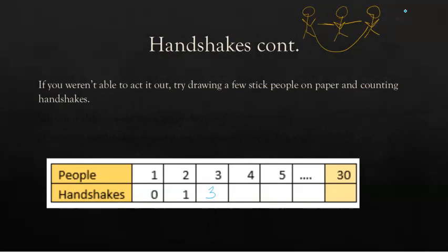What about a fourth person? Now this fourth person could shake hands with the first person, the second person, and the third person. So that adds three more handshakes to what we already had of three. So now we're up to six. What about if we draw a fifth person? We can add one, two, three, four more handshakes. So 10.